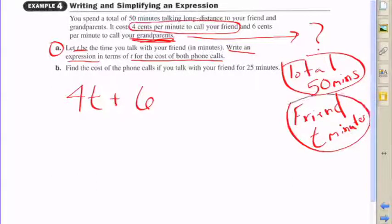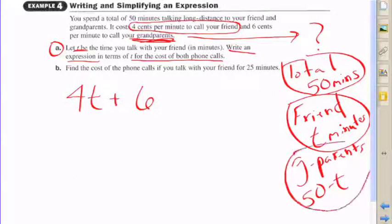Your friend is t minutes, okay, we know that it could be any amount. We don't know at this point how many minutes that was, but we know that we're representing it by t. So how are we going to represent the amount of time for grandparents?